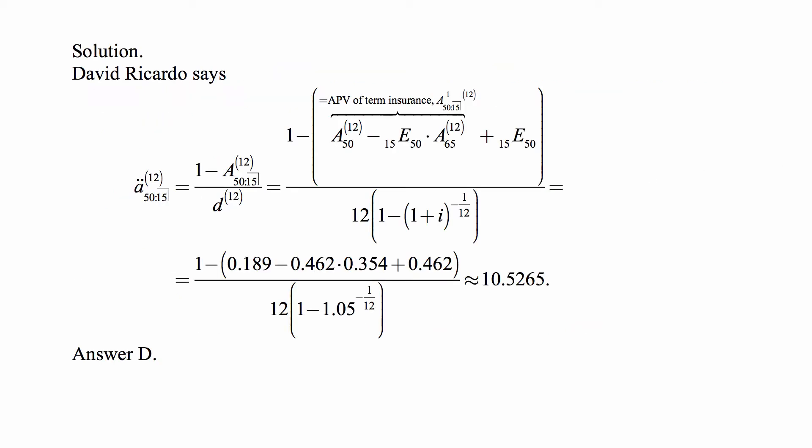One of the important things that I always tell my students is to know what I call the David Ricardo formula, which in this specific case is that A double dot 50 colon angle 15 upper 12 is equal to 1 minus A 50 colon angle 15 upper 12 divided by D upper 12. David Ricardo formula relates the life annuity to life insurance actuarial present value, and I call it that for a reason explained in the study manual for MLC that I published before, and I will have a new version of exam LTAM study manual hopefully within a month or so.